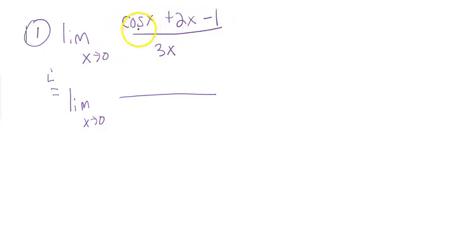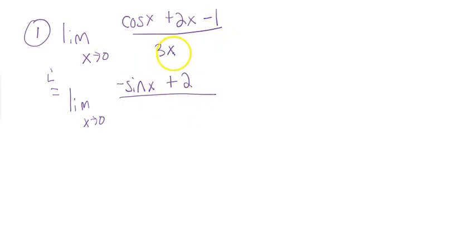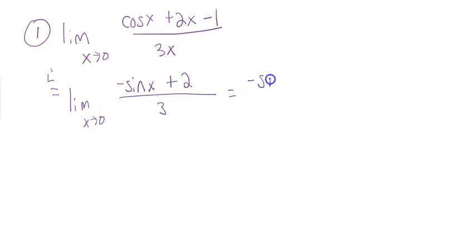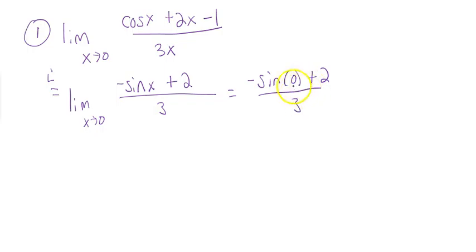Just take the derivative of the top. The derivative of cosine is negative sine, and the derivative of 2x is 2. The derivative of 1 is 0. On the bottom, the derivative of 3x is 3. Now when you plug in 0, you have negative sine of 0 plus 2 over 3. Since the sine of 0 is 0, you end up with 2 thirds.